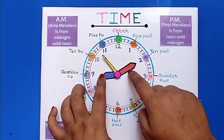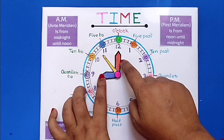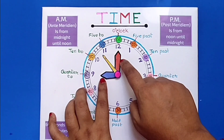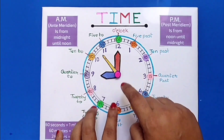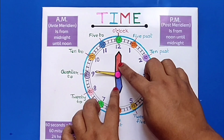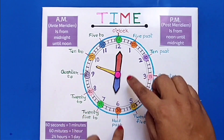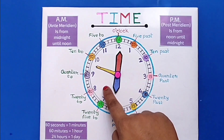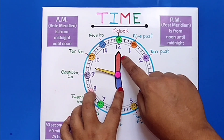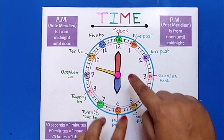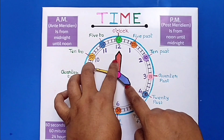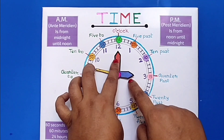When the long hand is on 12 and the short hand is on 9, it is called 9 o'clock. Similarly, when the short hand is on 6 and the long hand is on 12, it is called 6 o'clock. Now it is 3 o'clock.